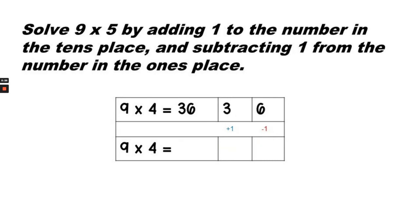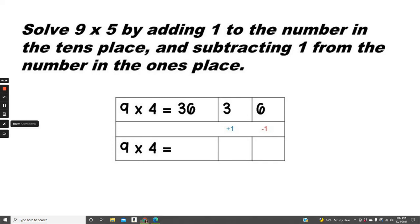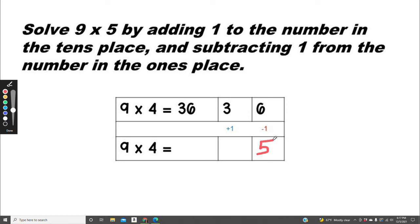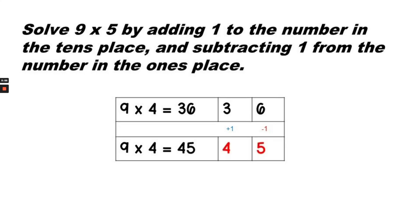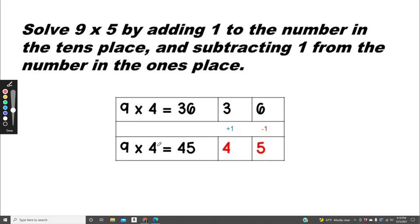Now let's solve 9 times 5 using the same strategy. 6 minus 1 is 5, and 3 plus 1 is 4. We're going to add 1 to the tens place. 9 times 5 equals 45.